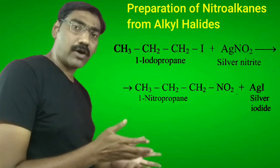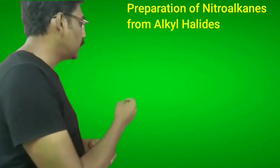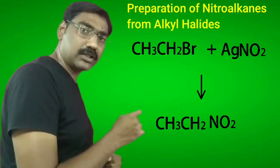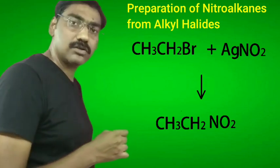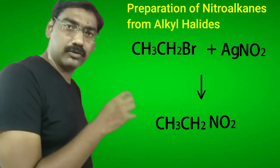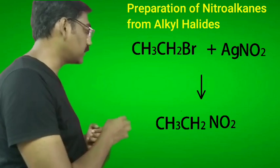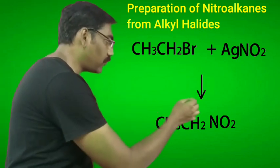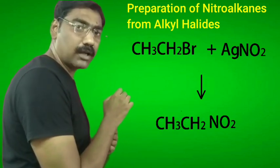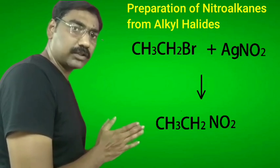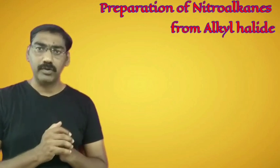Second example: bromoethane reacts with silver nitrite. CH3-CH2-Br reacts with AgNO2, and there is a formation of CH3-CH2-NO2, that is nitroethane, along with AgBr. This is a simple example for the preparation of a nitro alkane from an alkyl halide using silver nitrite.